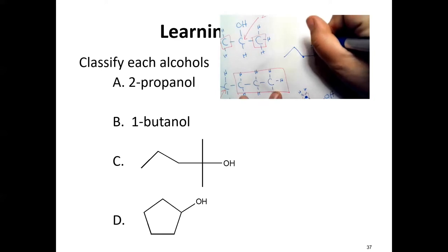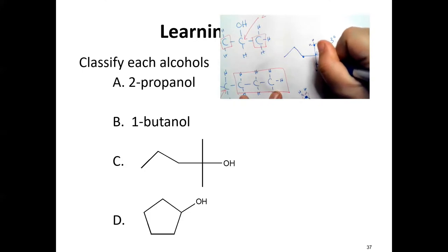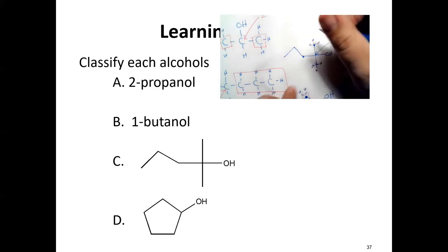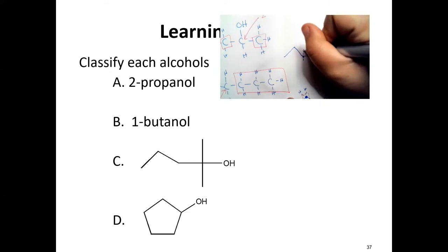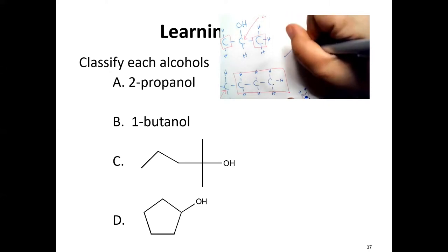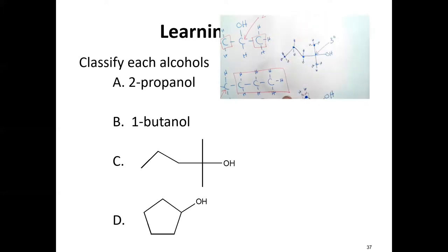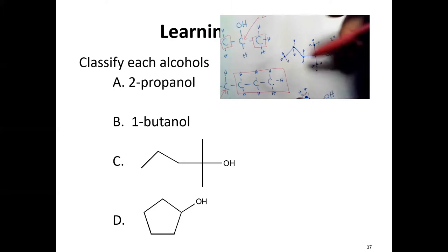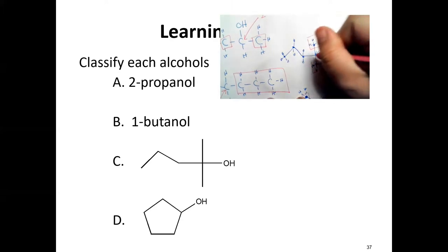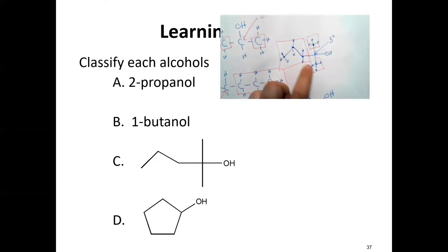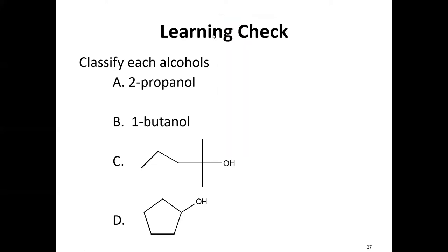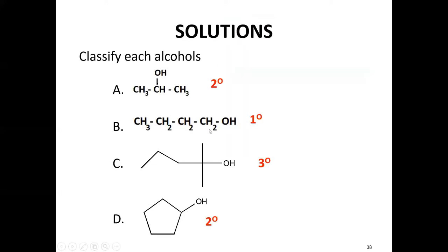Going back to example C to verify: the methyl groups attached to that carbon are carbon-based groups. Drawing it out fully, those would be CH2 groups and so on. We have one, two, three carbon-based groups attached — so that's tertiary. To review: example D is secondary, 1-butanol is primary, C is tertiary, cyclopentanol is secondary.